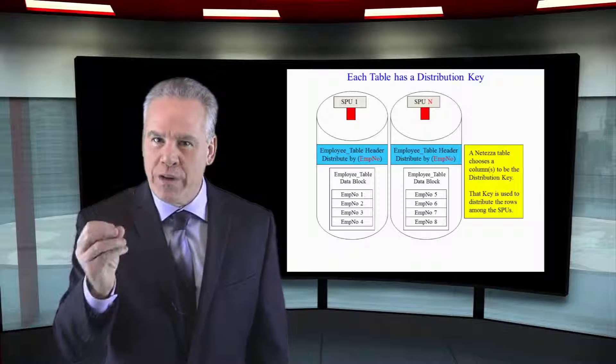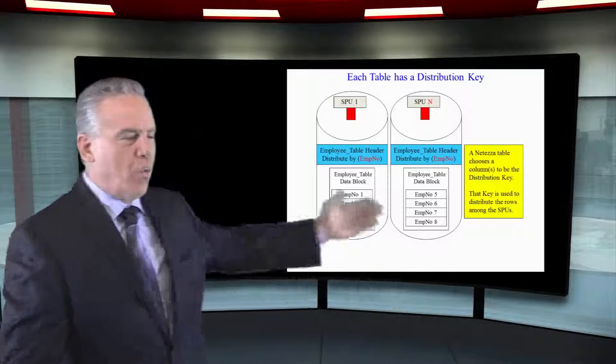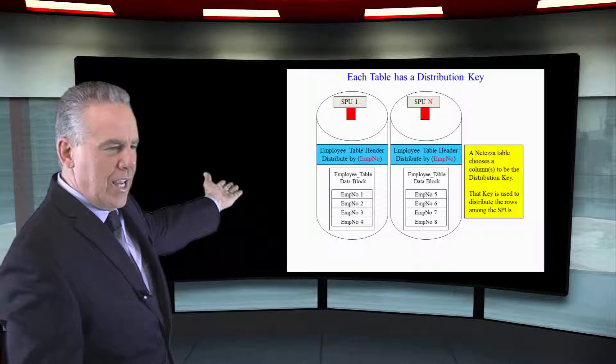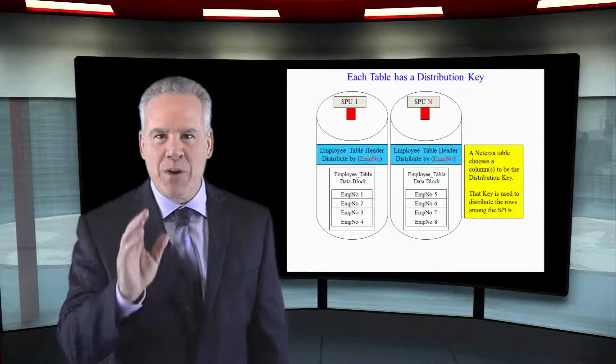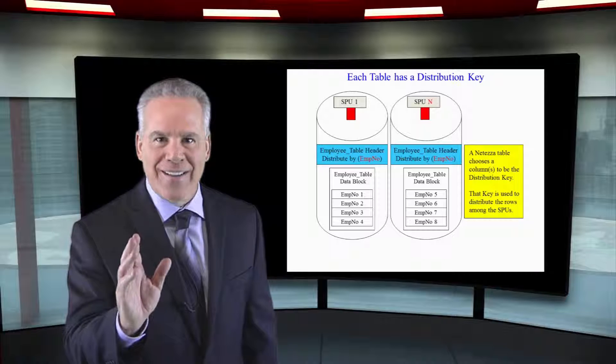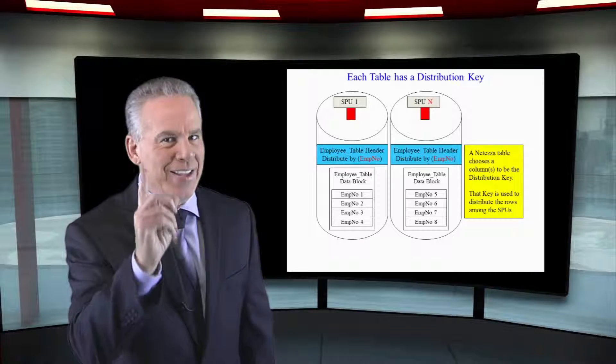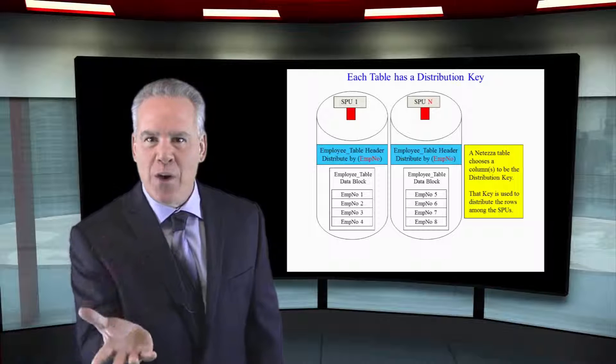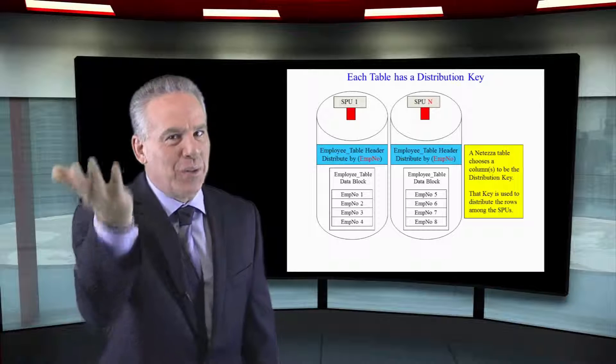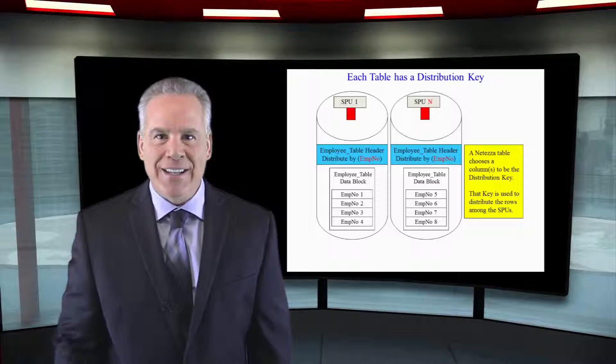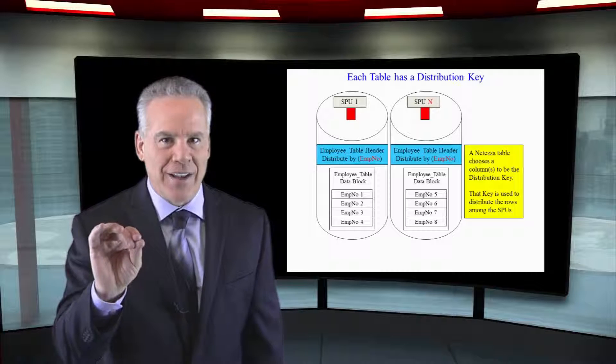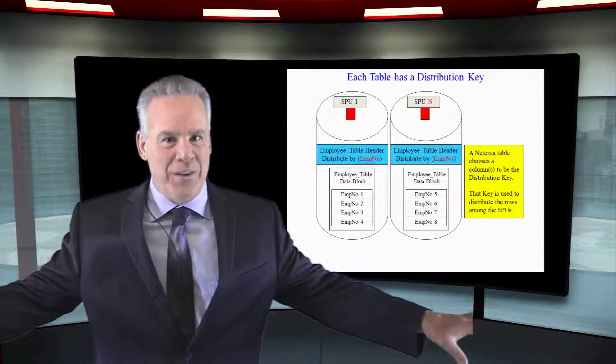But it's very important for retrieval. As you can see here, we've got our distribution key, and it's going to be on EMPNO. So, anytime somebody queries EMPNO in their where clause, it's going to go to one SPU, and only one block or two blocks are going to move. And that's the real key to keeping blocks minimized from moving from disk.